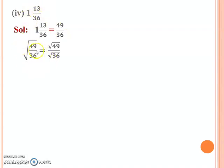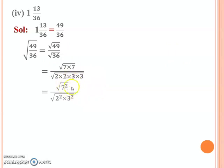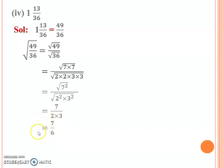Apply the square root to 49 over 36. Using the property, apply square root separately to both. The prime factors of 49 are 7 × 7, and prime factors of 36 are 2 × 2 × 3 × 3. Write these in exponential form as 7² over 2² × 3². Since square and square root cancel each other, the answer is 7 over 2 × 3, which simplifies to 7 over 6.